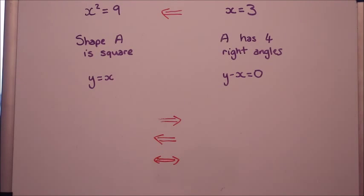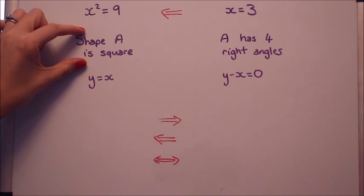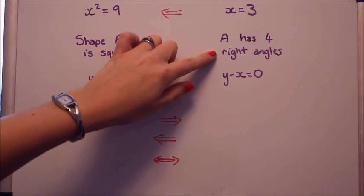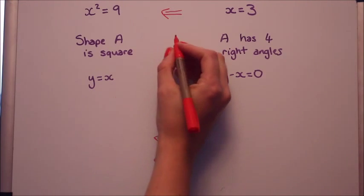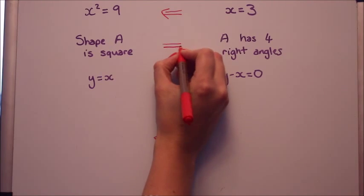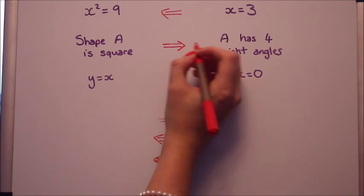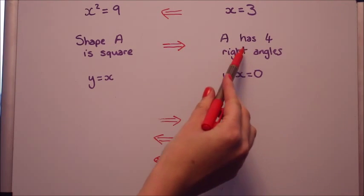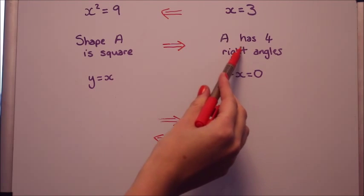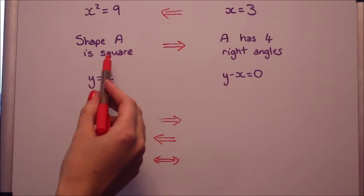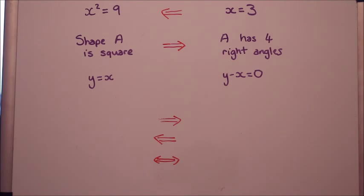Let's take the second one. Assume that shape A is a square, does that mean definitely that A has 4 right angles? Well yes, it does. A square has to have 4 right angles, so we will put in an implication that way. Now, starting with A has 4 right angles, does that mean necessarily that it's a square? No, it doesn't. It could be a rectangle or a square.